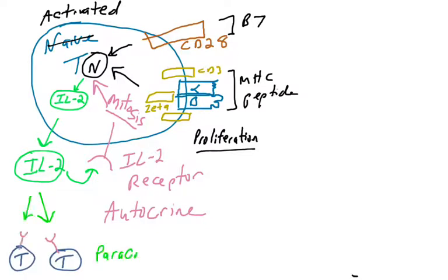That IL-2, the cytokine, can also go to neighboring T cells that might have IL-2 receptors on their surface. This naive T cell that's now becoming activated can actually induce proliferation of nearby T cells. This would be paracrine signaling. Activated T cells secrete IL-2, which can either induce autocrine signaling and their own proliferation, or paracrine signaling and neighboring T cell proliferation.